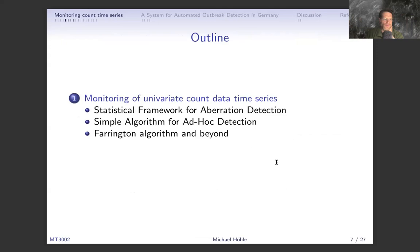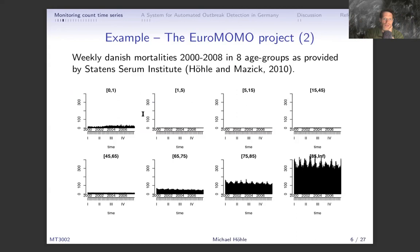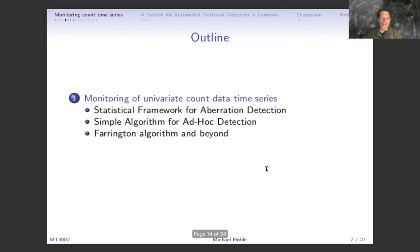Here you can already see that while I said I'll discuss univariate methods, this mortality data is actually a multivariate time series — several age groups simultaneously. In the next lecture we'll also consider a geographic dimension, with age strata and geographic regions, making it more complex. But let's start with the simplest setup: the statistical framework for aberration detection with a univariate time series y_t, where t runs from observation one through to the current time.